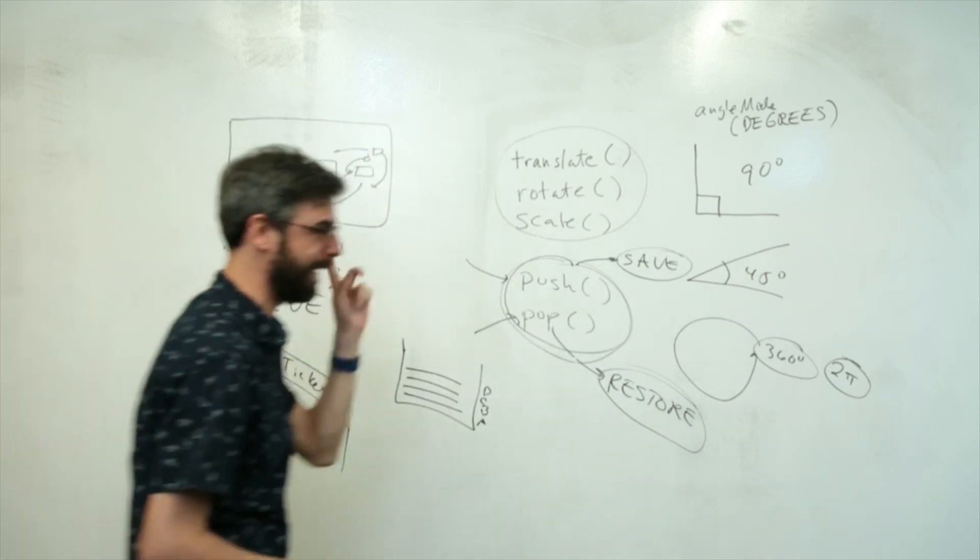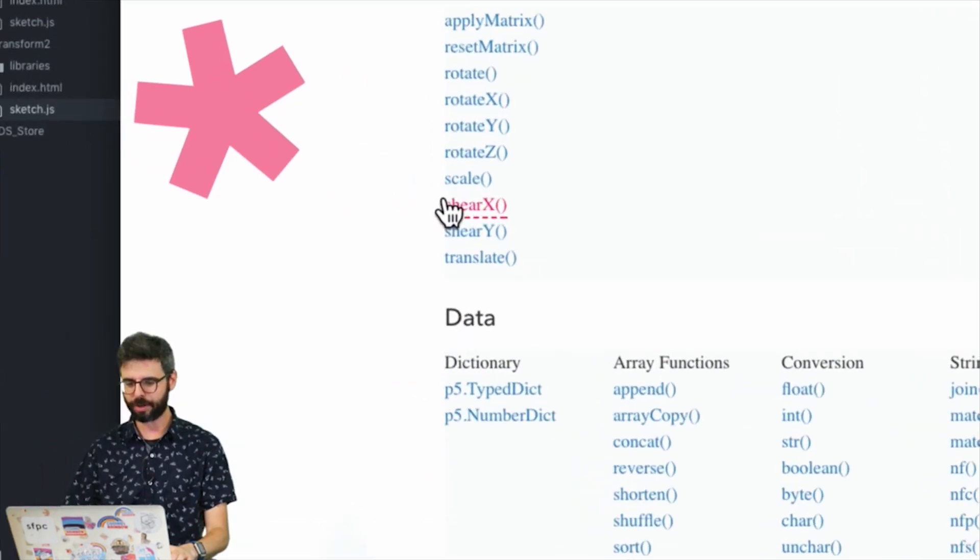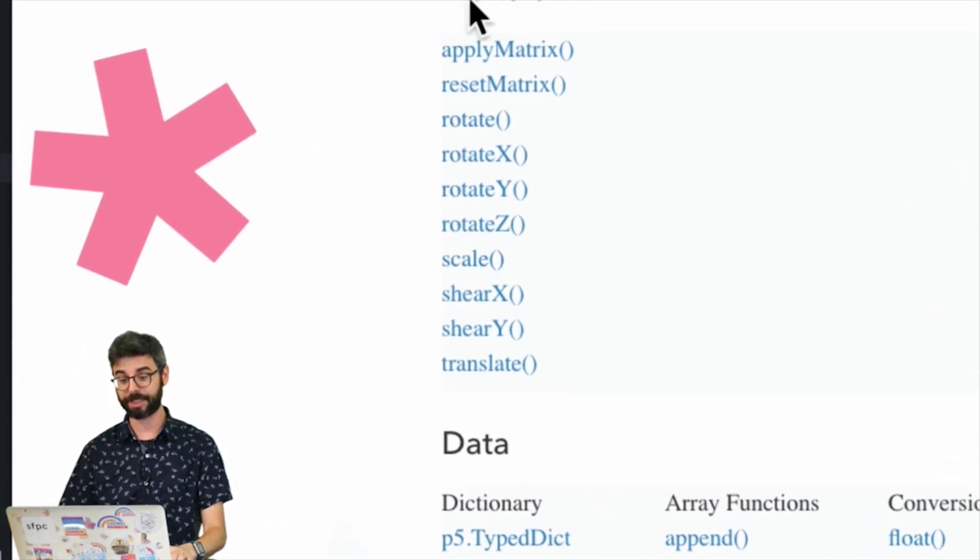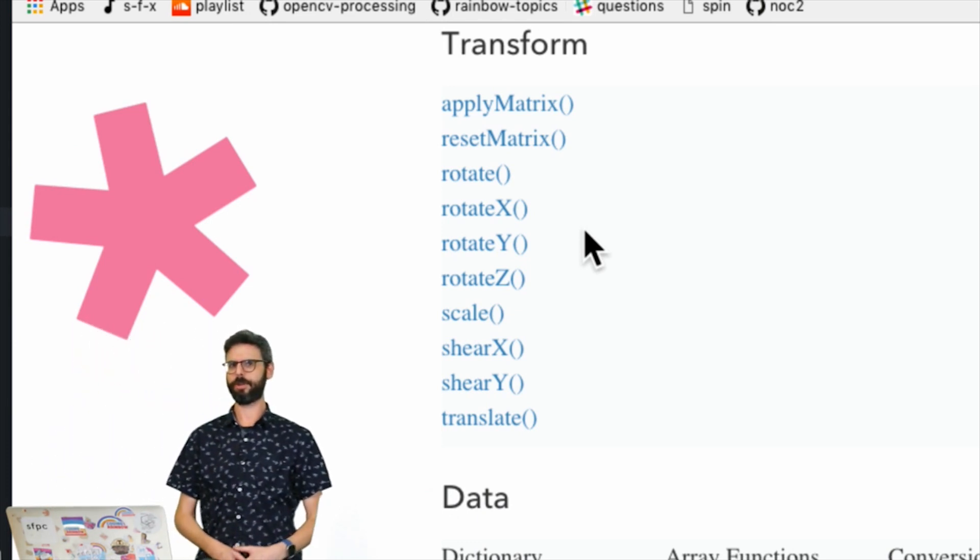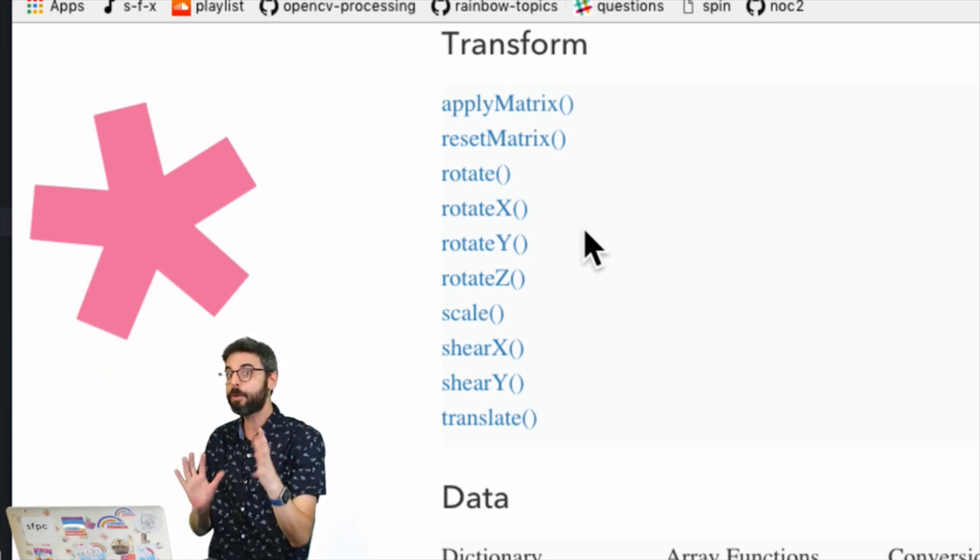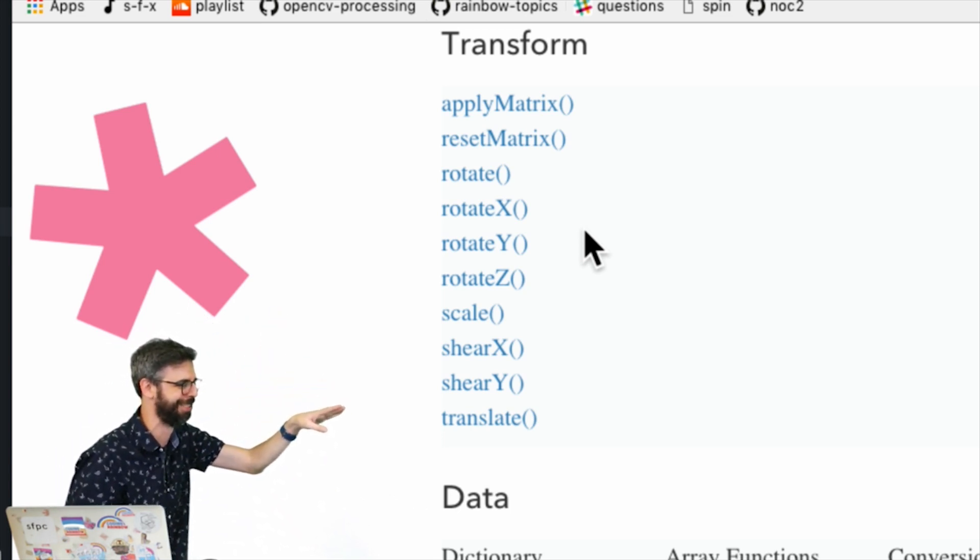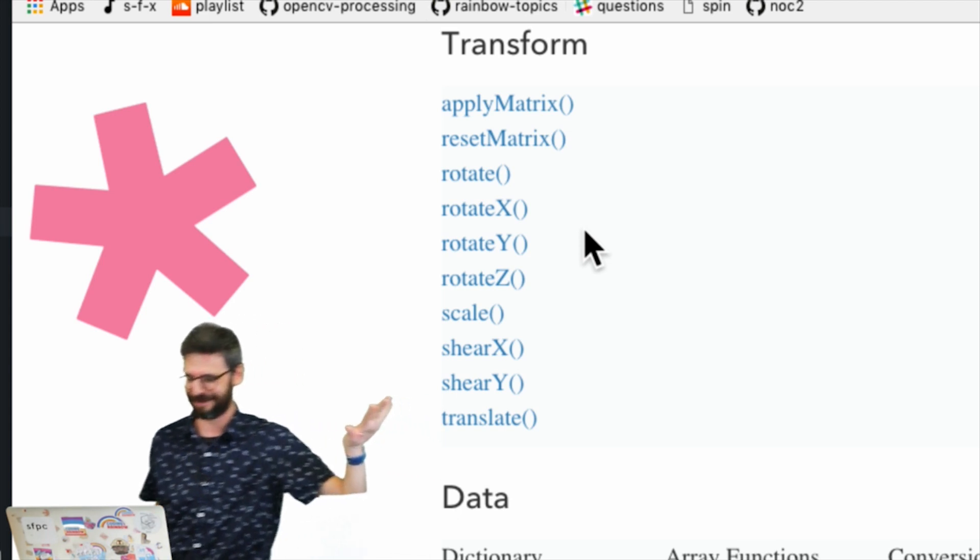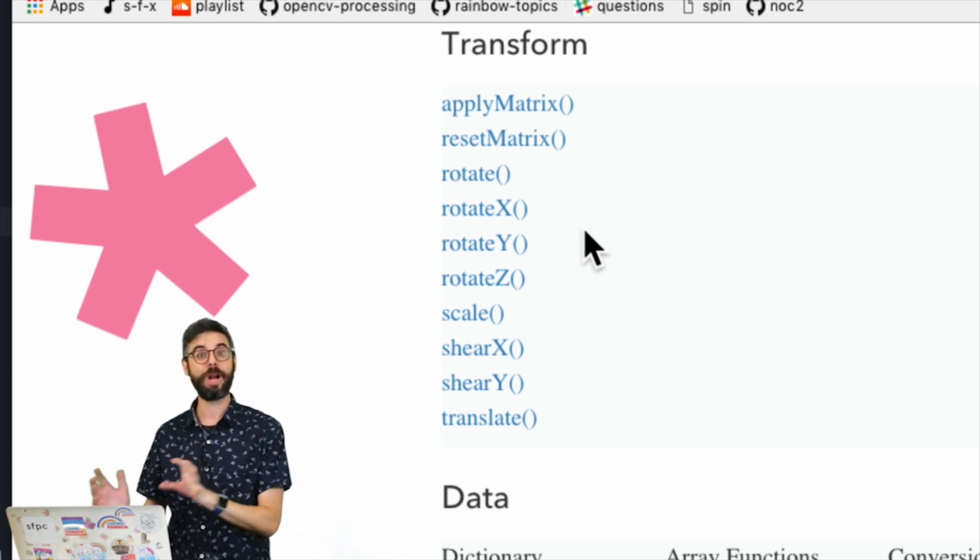Now the other thing I want to say, with the P5 reference here, I'm going to go to transform. And I'm going to look at all these functions. So there's some things that are important here. Number one is, oh my goodness, in addition to rotate, there's rotateX and rotateY and rotateZ. Now those functions rotate X, Y, and Z. I actually have no idea what shearX and shearY do. We should look at the reference to read that.